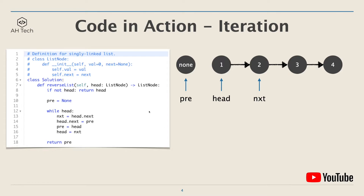Let's look at the iteration approach using the linked list 1, 2, 3, 4 as an example. At the beginning, we first check if head is null, then we just return head to handle the edge case. We set a pre-pointer that points to None — pre is actually the head of the reverse list that we will return at the end. Then we have a while loop with the condition: while head is not null. In the loop, first save the next node of head to nxt, then let head point to the pre node to reverse it.